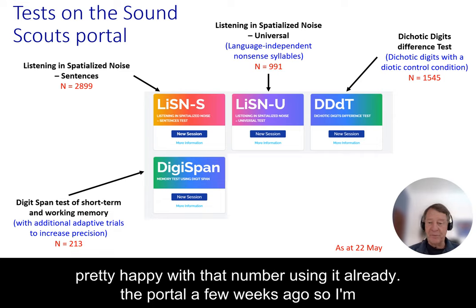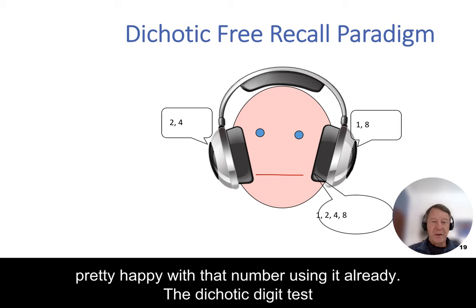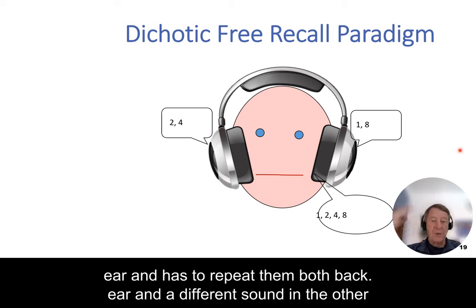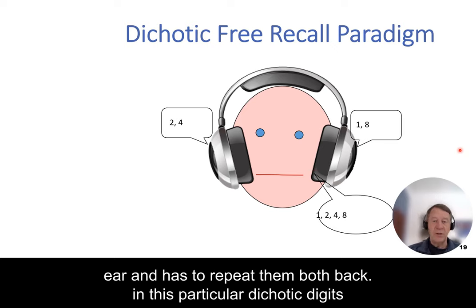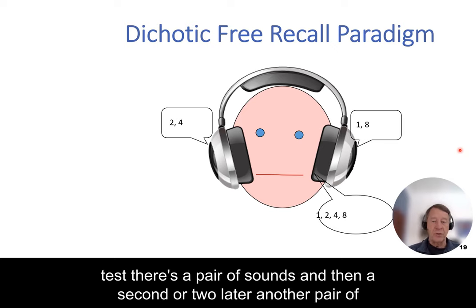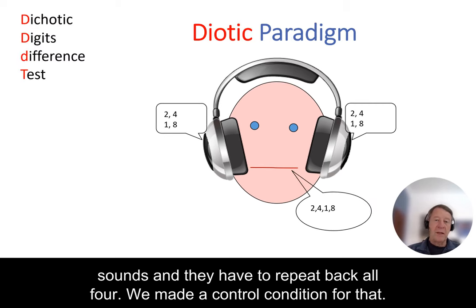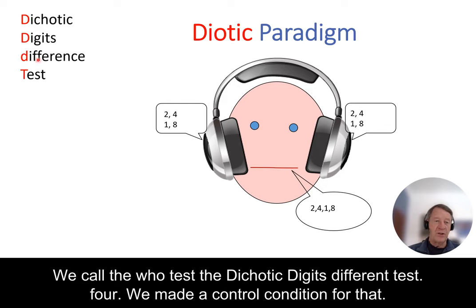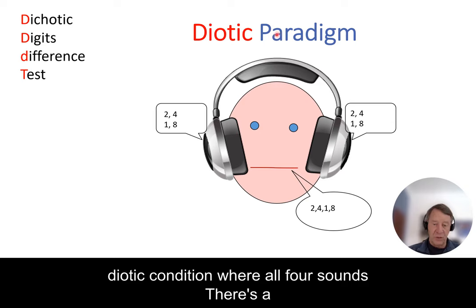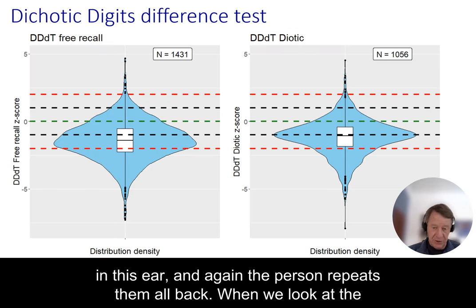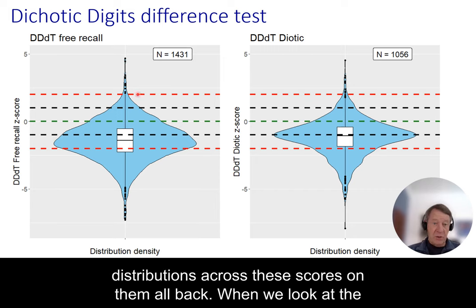DigiSpan was only put on the portal a few weeks ago, so I'm happy with that number already. The dichotic test is when a person hears one sound in one ear and a different sound in the other ear and has to repeat both back. In this particular dichotic digits test, there's a pair of sounds and then another pair a second or two later, and they have to repeat back all four. We made a control condition called the Dichotic Digits Difference test, including a diotic condition where all four sounds are in each ear, and again the person repeats them all back. The distributions of scores on the server show quite a similar pattern.